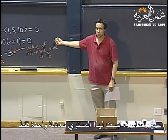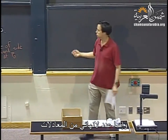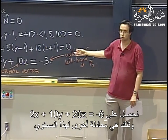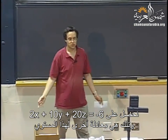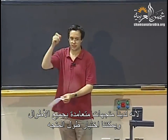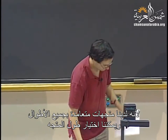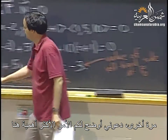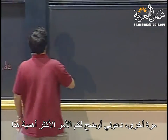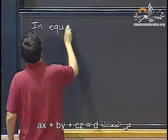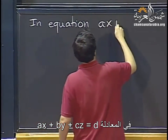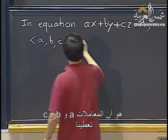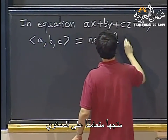A plane doesn't have just one equation — it has infinitely many equations. For instance, multiplying everything by 2 gives 2x plus 10y plus 20z equals minus 6, which is also an equation for this plane. That is because we can choose normal vectors of all sizes. So just to repeat the single most important thing: in the equation Ax plus By plus Cz equals D, the coefficients ABC give us a normal vector to the plane.